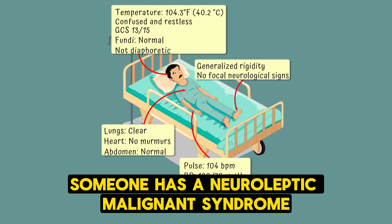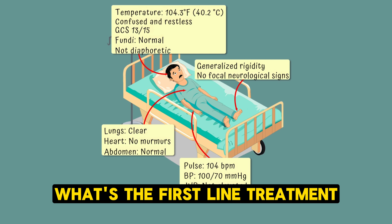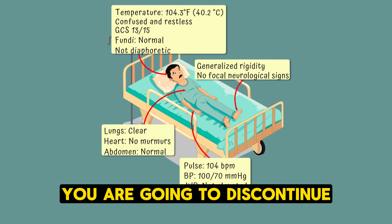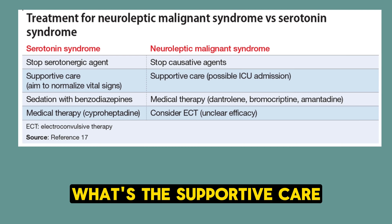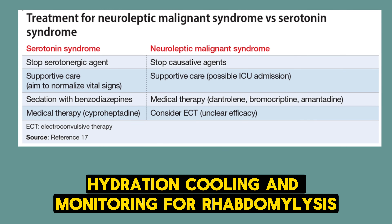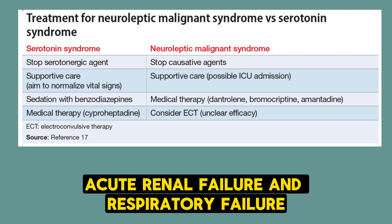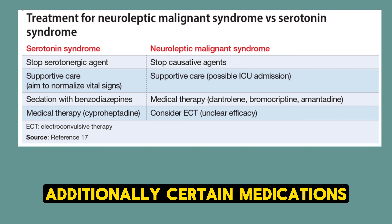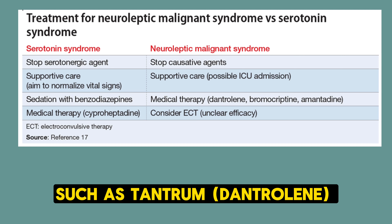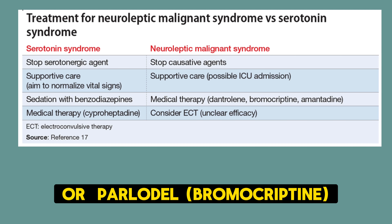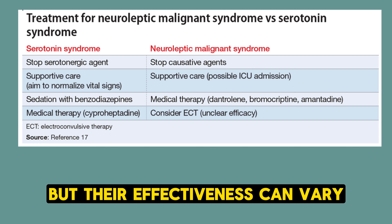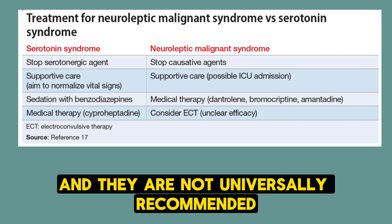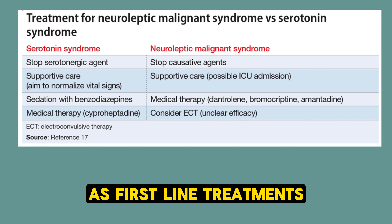For neuroleptic malignant syndrome, first-line treatment is to discontinue the neuroleptics and provide supportive care — hydration, cooling, and monitoring for rhabdomyolysis, acute renal failure, and respiratory failure. Certain medications such as dantrolene or bromocriptine may be used in some cases but are not universally recommended as first-line treatments.